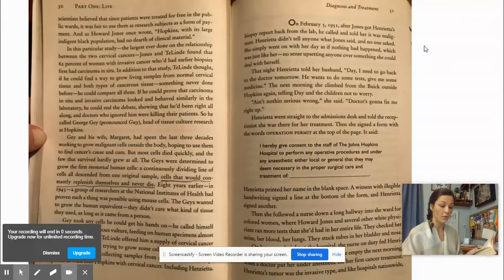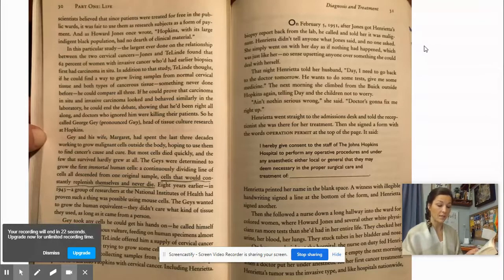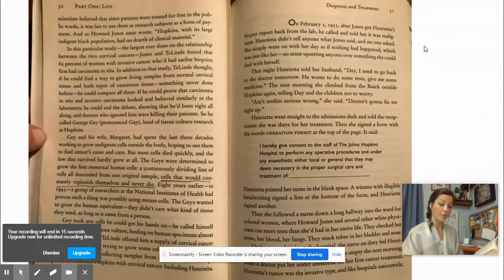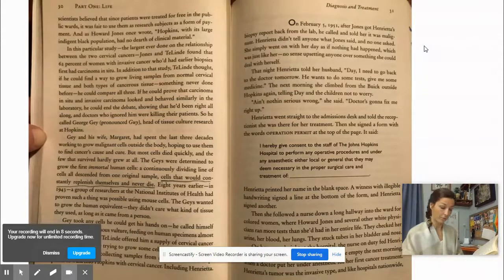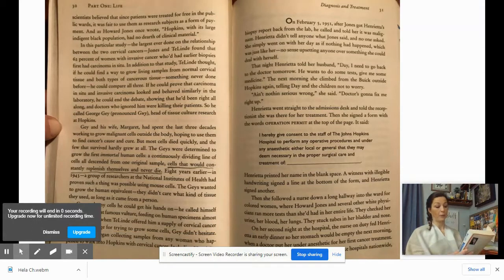Henrietta went straight to the admission desk and told the receptionist she was there for her treatment. Then she signed a form with the words Operation Permit at the top of the page. It said, I hereby give consent to the staff, the John Hopkins Hospital, to perform any operative procedure and under any anesthetic, either local or general, that they may deem necessary and proper surgical care and treatment of. Henrietta printed her name in the blank space. A witness with an illegible handwriting signed a line at the bottom of the form and Henrietta signed the other.